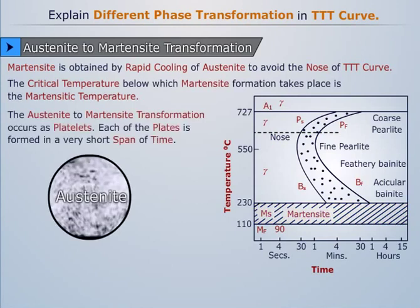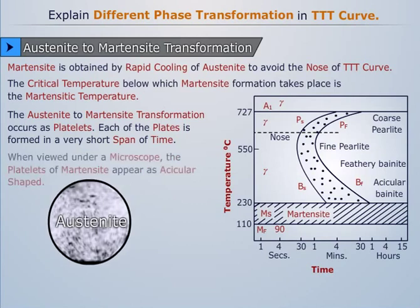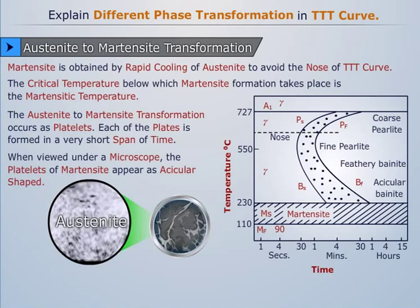The austenite to martensite transformation occurs as platelets. Each of the plates is formed in a very short span of time. When viewed under a microscope, the platelets of martensite appear as acicular shaped.